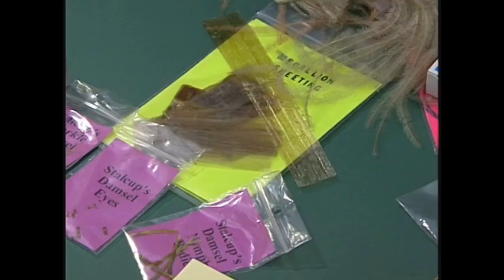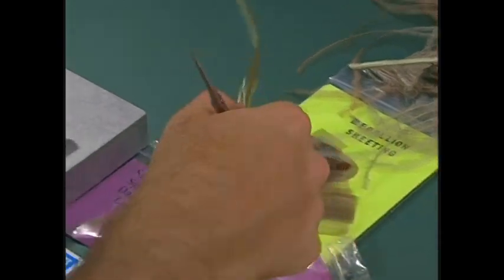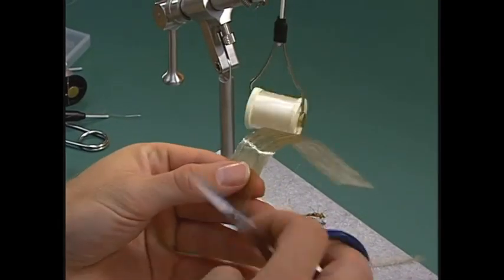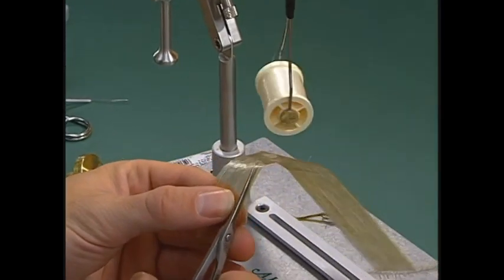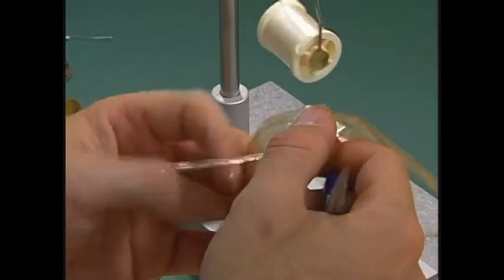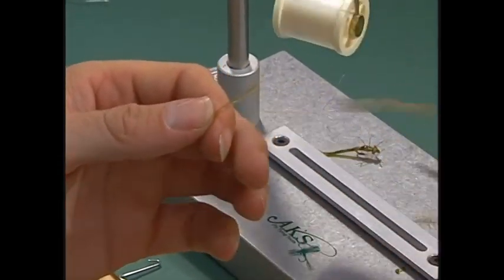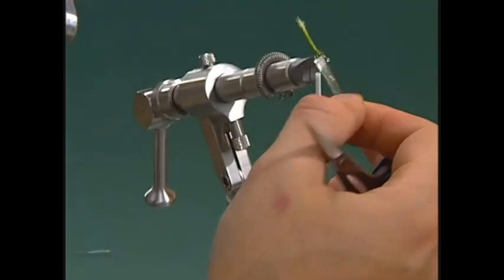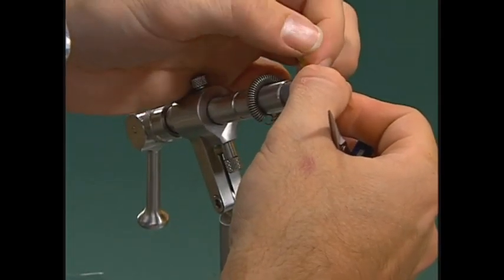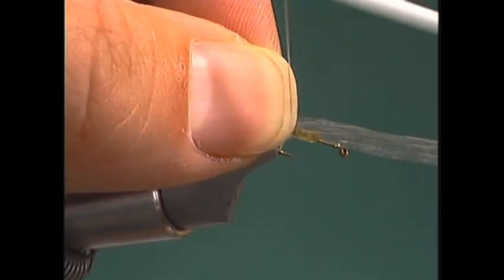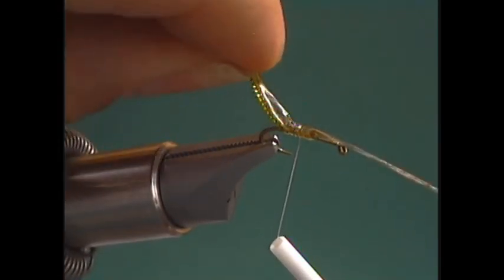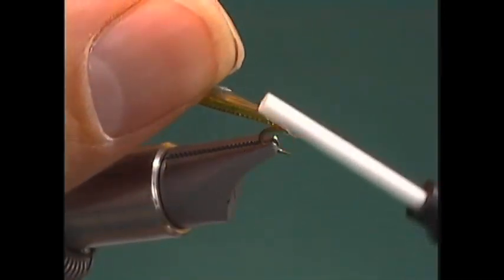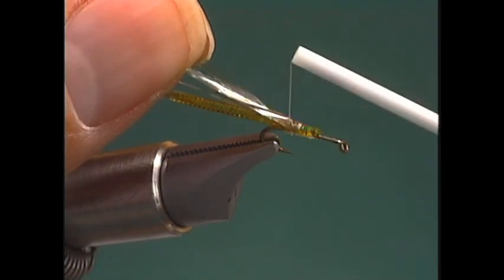Next we're going to take some of the medallion sheeting. We're going to cut a little strip of it. This is going to be our wing pad and thorax area. Then we're going to take one end and lay it back over the body. Take a wrap of thread and then come forward a little bit. Make sure this is sticking straight out over the body, then fold this one back over. Tie it down with a couple turns of thread.